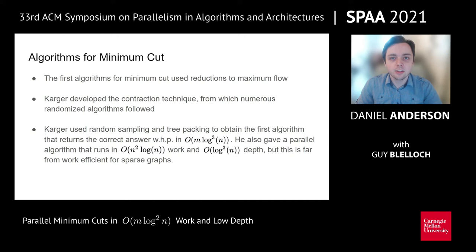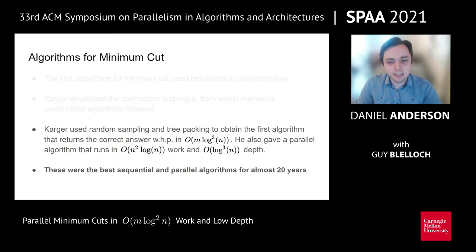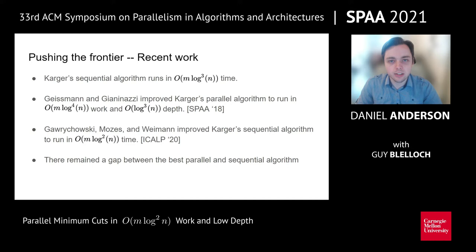Note, however, that this parallel algorithm is far from work efficient for sparse graphs. Interestingly, these were the best sequential and parallel algorithms for almost 20 years. Compared to Karger's sequential algorithm that runs in m log cubed n time, Geisman and Gianni Natsi recently improved Karger's parallel algorithm to run in m log to the 4n work and log cubed n depth. Note that this is just a log n factor slower than Karger's sequential algorithm, but vastly faster than his parallel algorithm for sparse graphs.